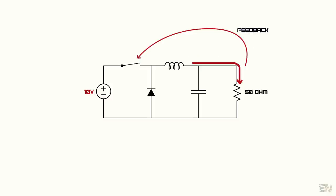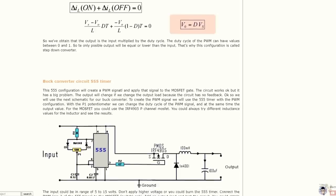This process is called feedback. If the load is smaller, we should increase the PWM signal so we could maintain the 5V that we set before. If you go to my webpage, you will find some circuits for the buck converter.